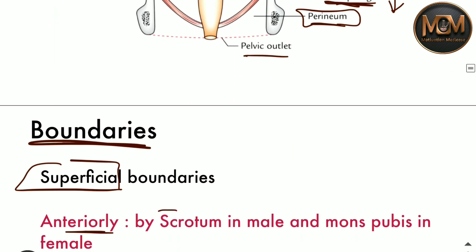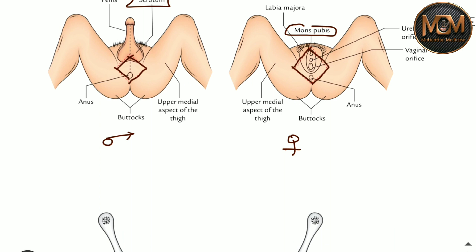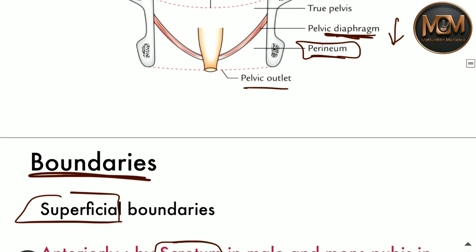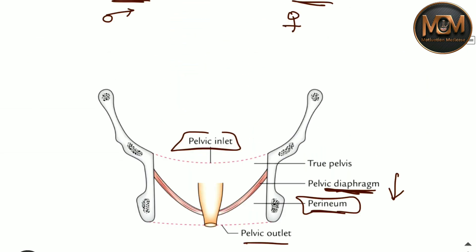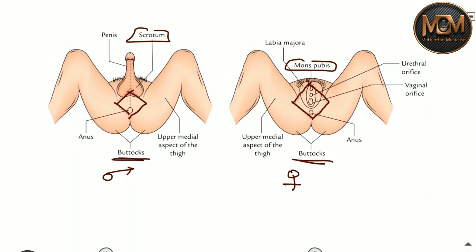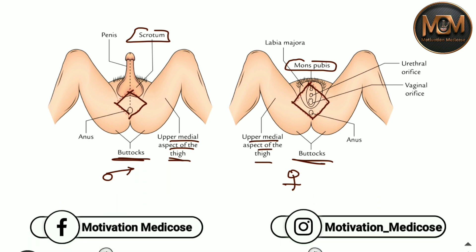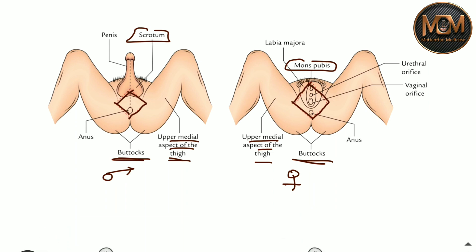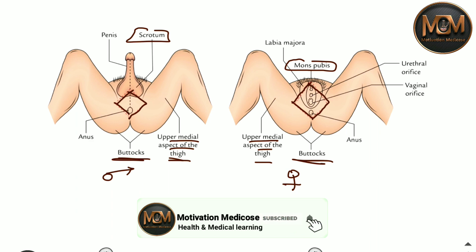So anteriorly the structure present is the scrotum in the male and the mons pubis in the female. Posteriorly, as you can see in the diagram, the buttock is present in both male and female. On each lateral side is the upper medial aspect of the thigh present, as you can clearly see in the diagram.